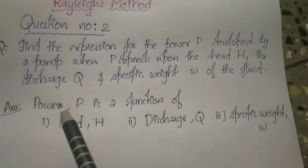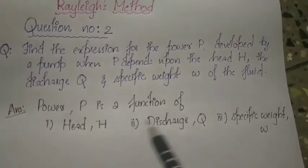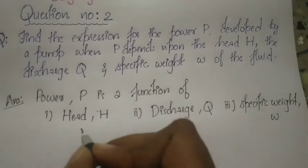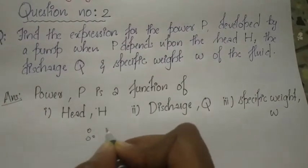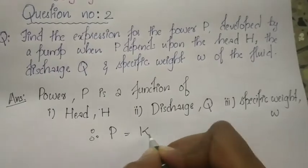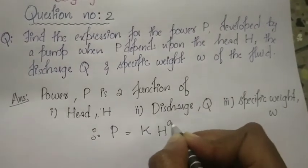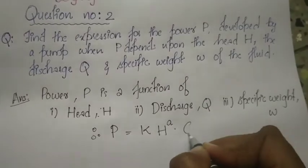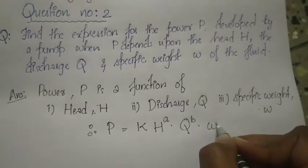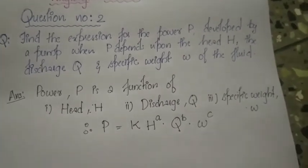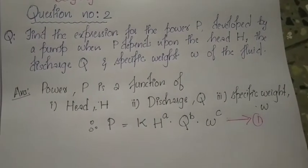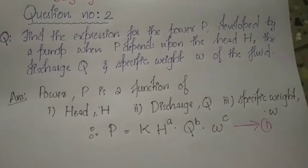So, the expression for the power P — P depends on the factors: head H, discharge Q, specific weight W. That is, power P is a function of head H, discharge Q, and specific weight W. Therefore, P equals K into H raised to A, into Q raised to B, into specific weight W raised to C. This is equation number 1: P = K · H^A · Q^B · W^C.